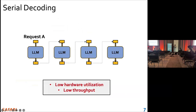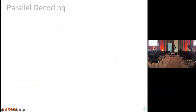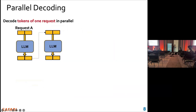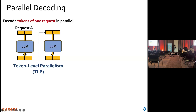To overcome these issues, people use parallel decoding. To be more specific, we can do parallel decoding to decode tokens of one request in parallel. As you can see, the tokens in request A can be generated and processed in parallel — we call this token-level parallelism, TLP.